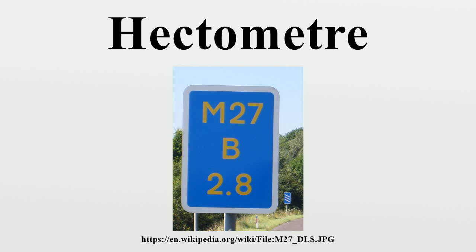In sports: 100 meters is the distance a very fast human can run in about 10 seconds. 100.584 meters is the length of a Canadian football field between the goal lines. A soccer field ranges from 91.5 to 137 meters in length. 105 meters is the length of a typical football field.